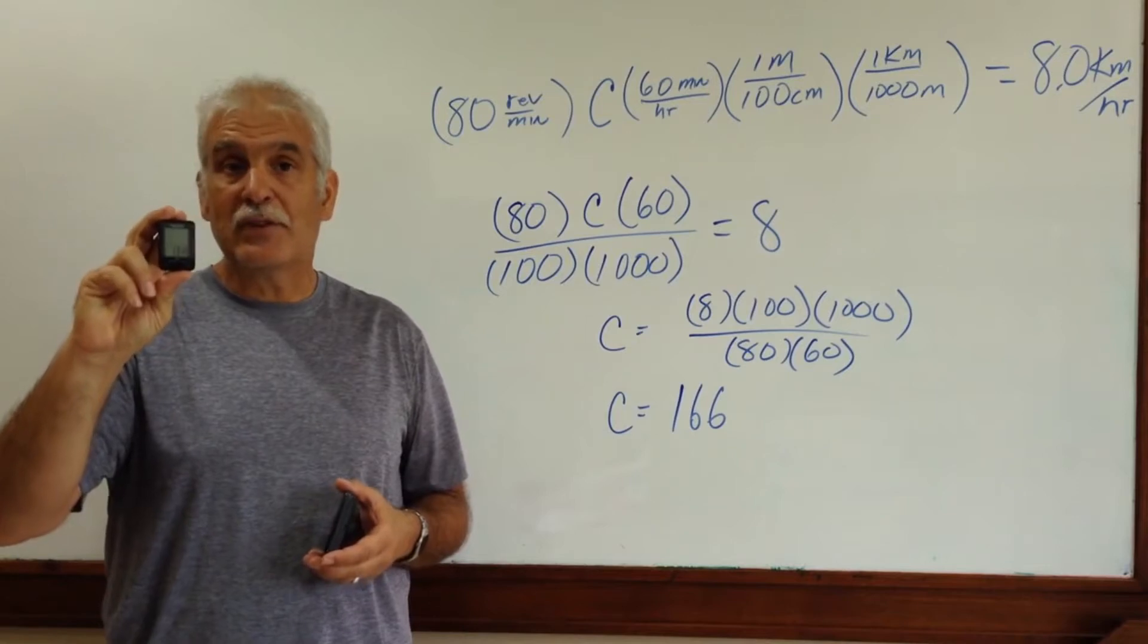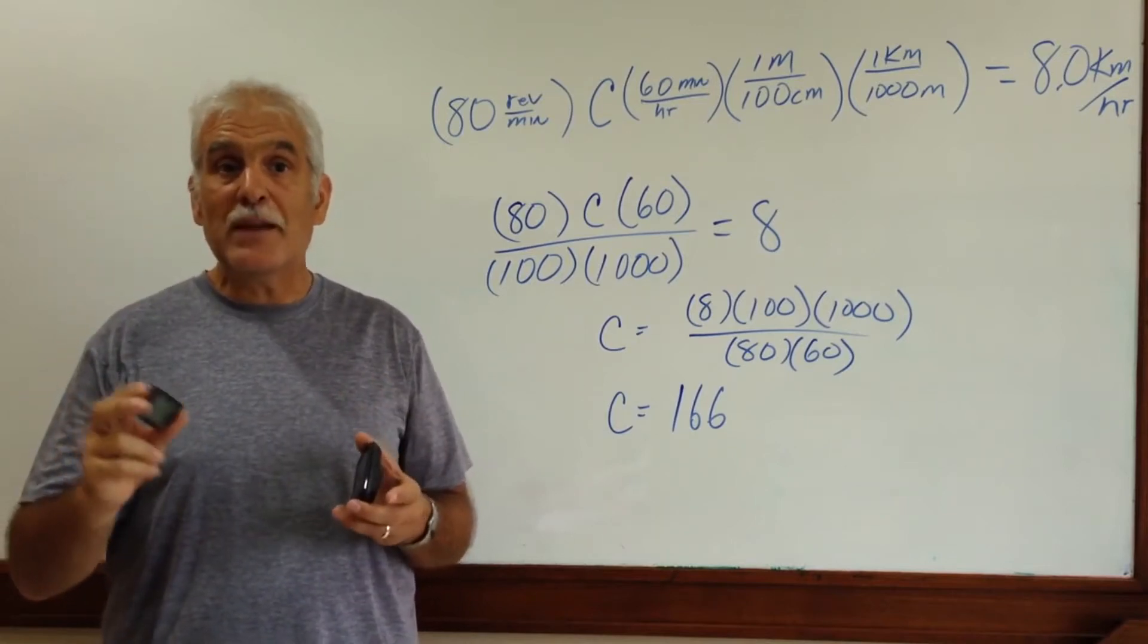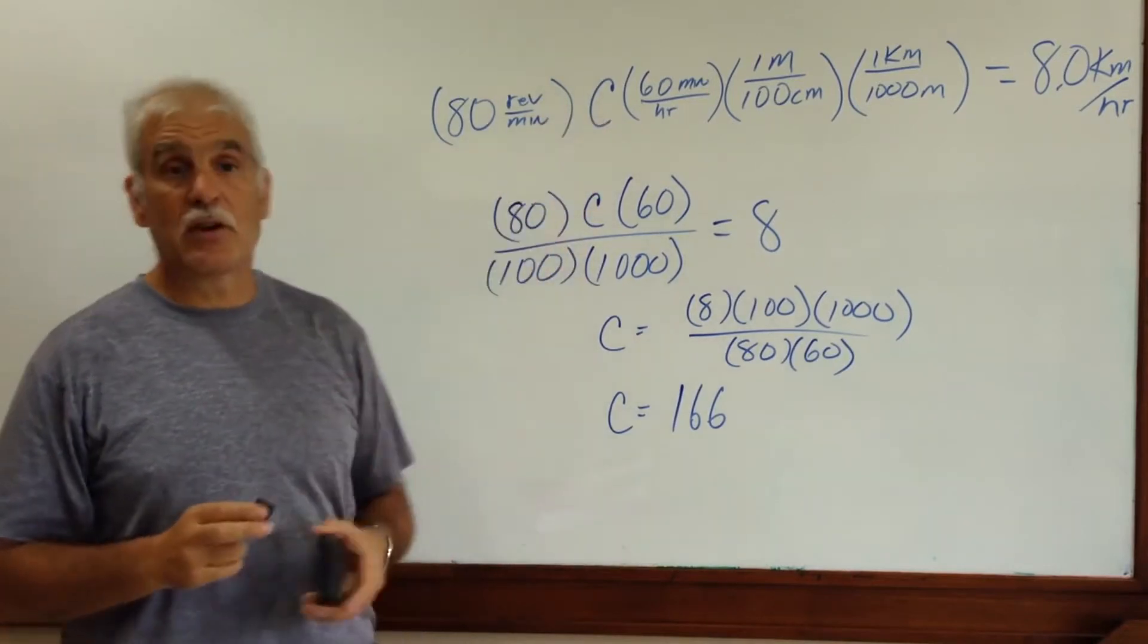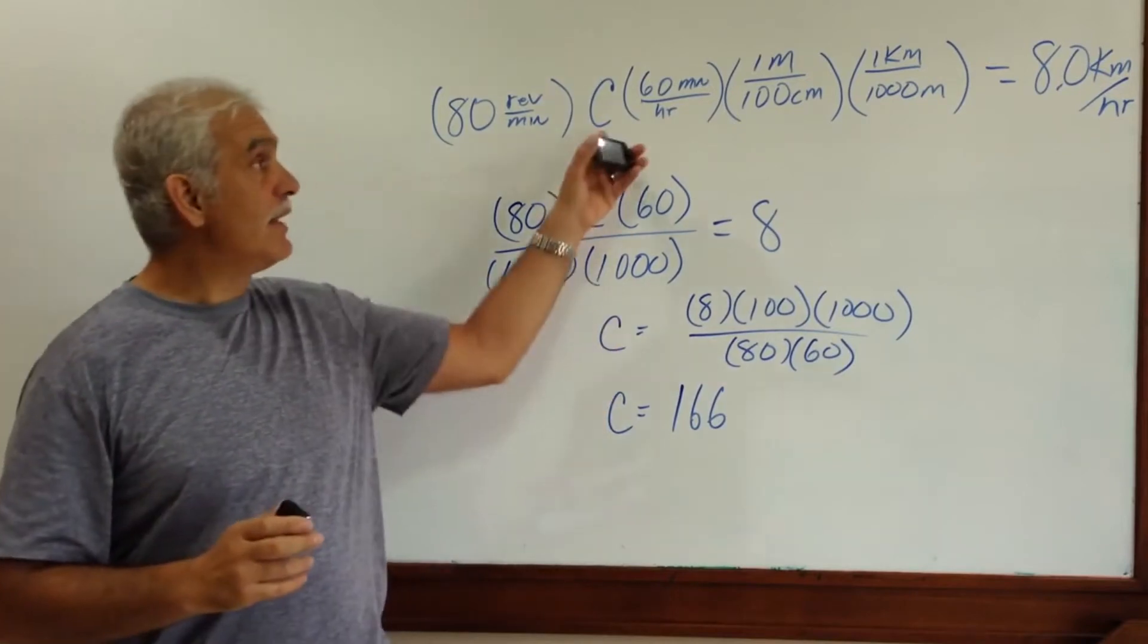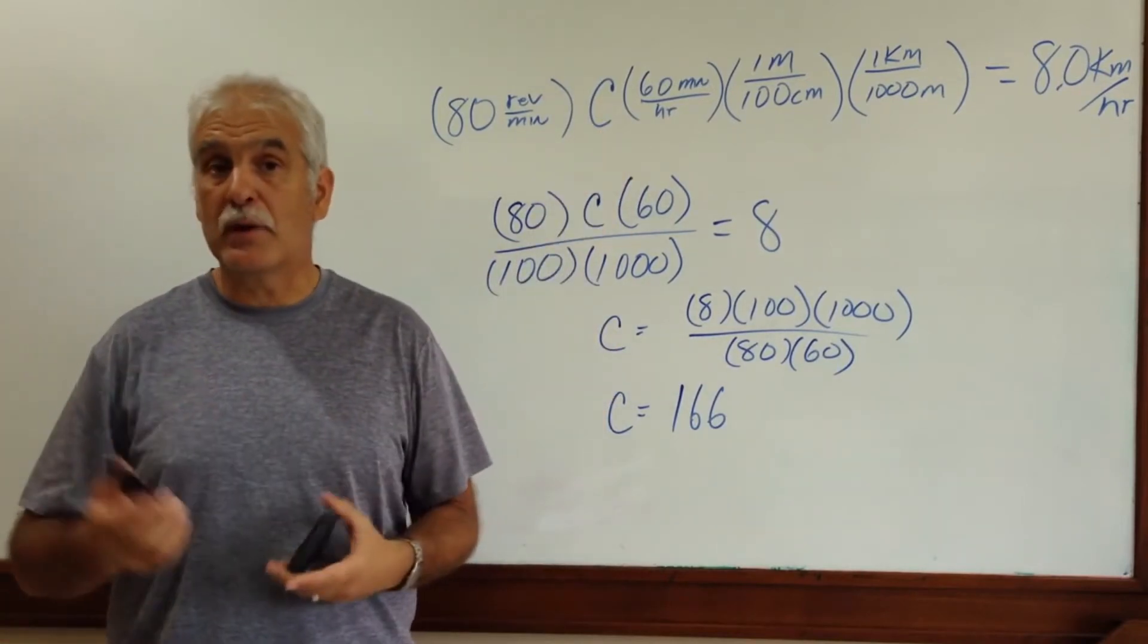Now these odometers have different size wheels that you can use, and the magic number that you type in is this circumference. So little kids bike, road bike, that changes to make the miles per hour more accurate.